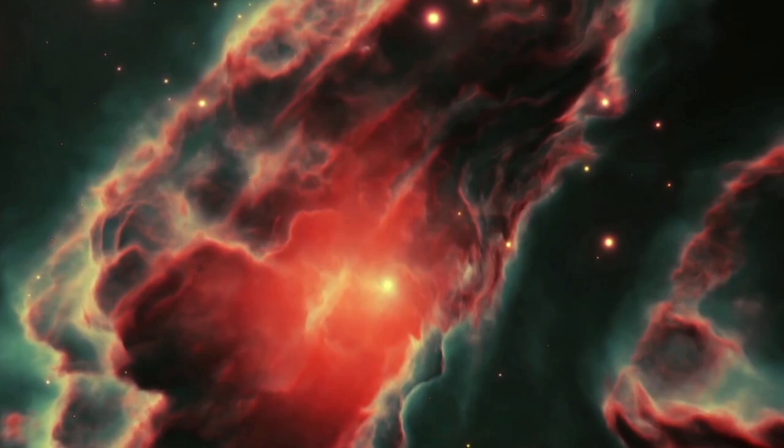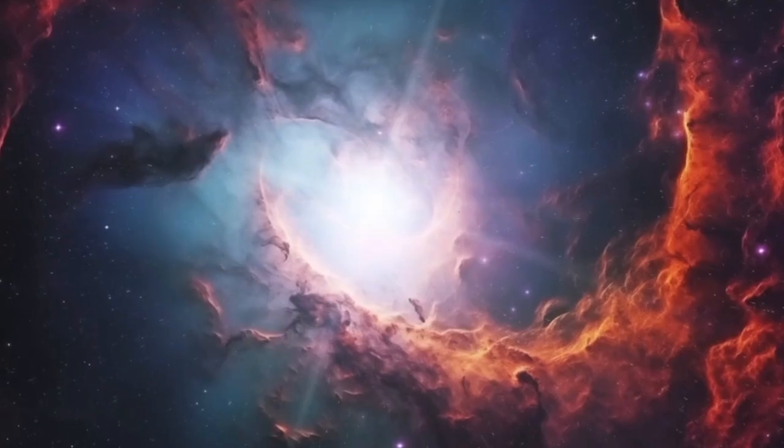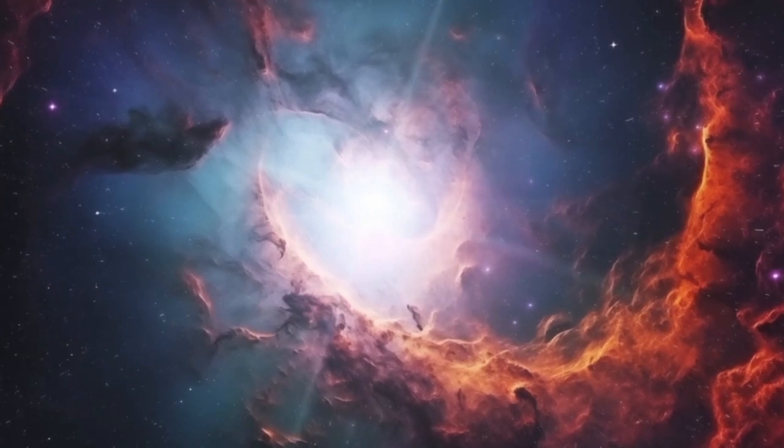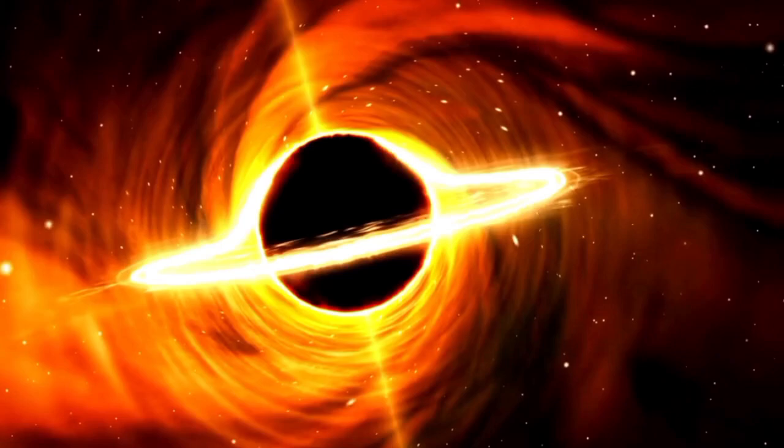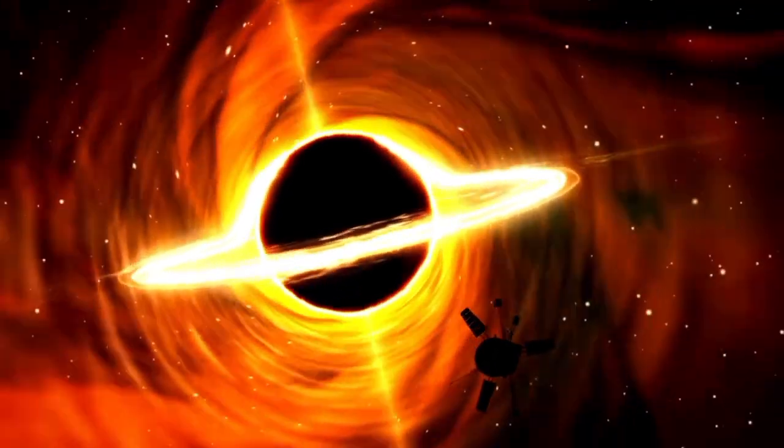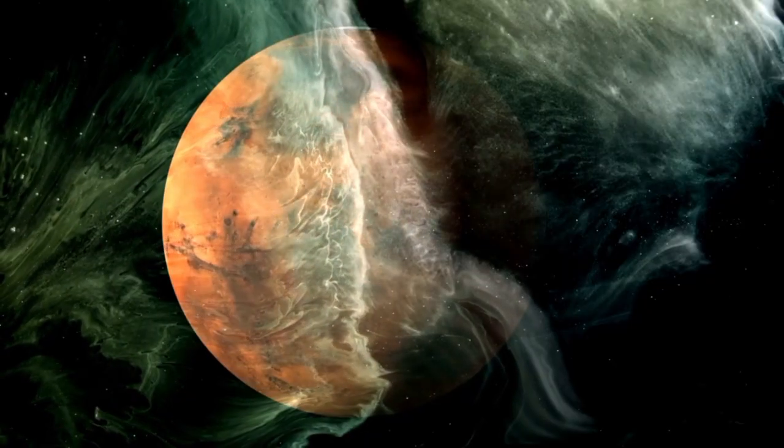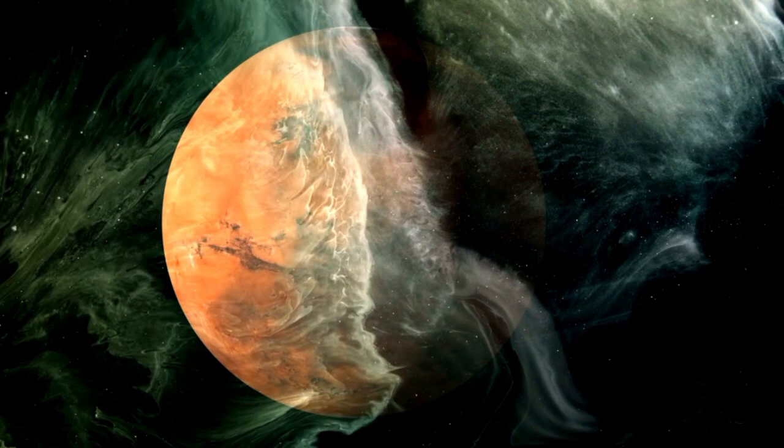Betelgeuse's appearance of being yellow, however, was noted by ancient Chinese astronomers, indicating that it may have been a yellow supergiant in the past. Even though their lifespan is only 10 million years, large stars tend to consume their hydrogen quickly, resulting in their premature demise.